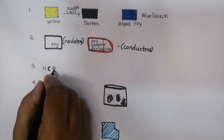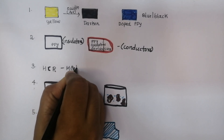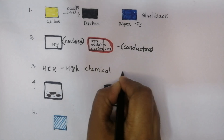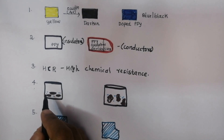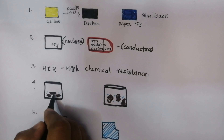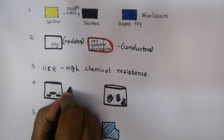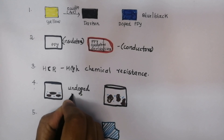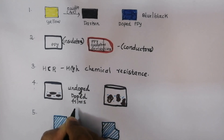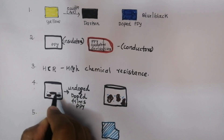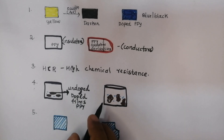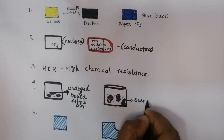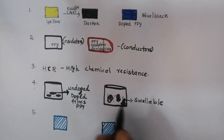The third property is high chemical resistance. PPy has high chemical resistance. The fourth property: undoped and doped films of PPy are insoluble but they are swellable.